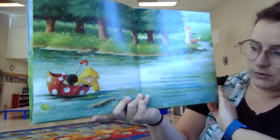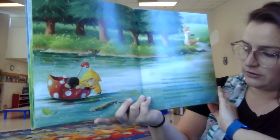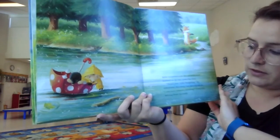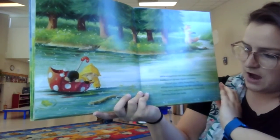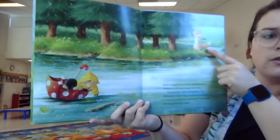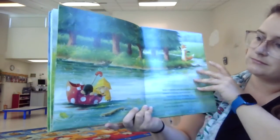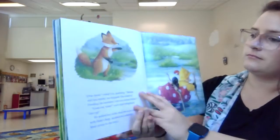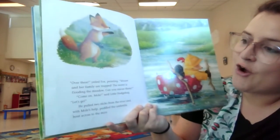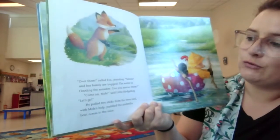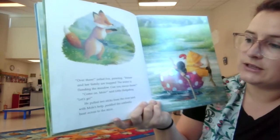Mole scrambled into the umbrella as it bobbed on its way down the river. Thank you, little hedgehog, he whispered shivering. But then he sat up. I hear someone shouting. It was Fox waving from the bank. There he is. Over there, he yelled. Over there, yelled Fox pointing. Mouse and her family are trapped. The water is flooding the meadow. Can you rescue them?